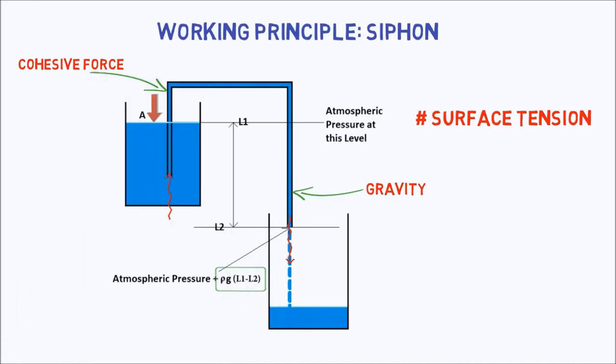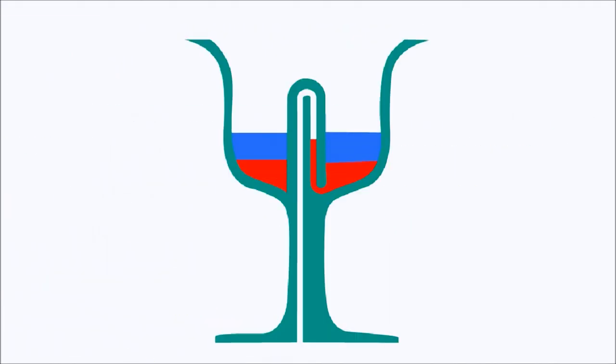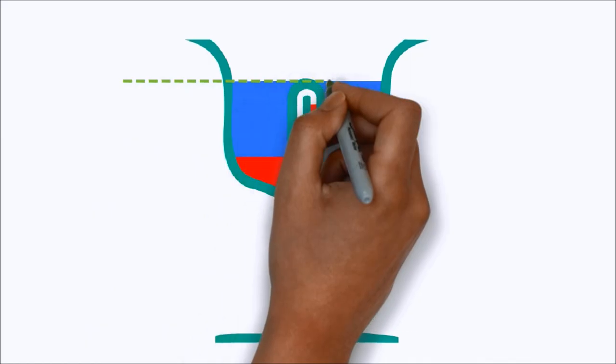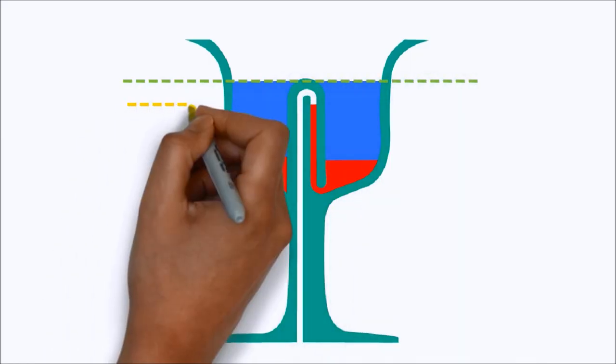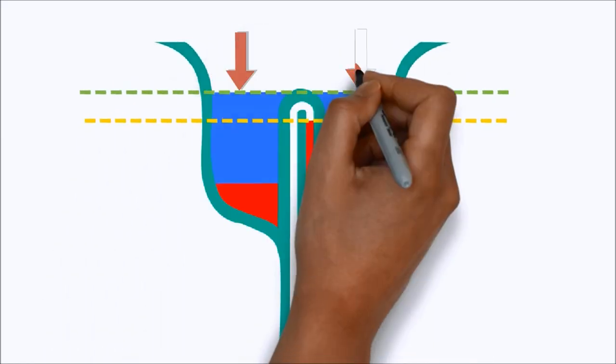However, you can prevent the spilling by first pouring a high density liquid and then the liquid which we want to drink. In this case, the weight of the water is not enough to push the liquid up through the tube.